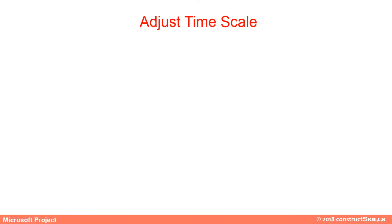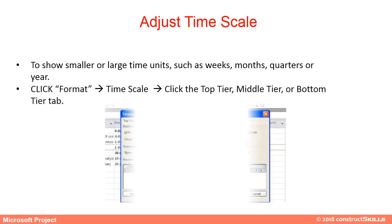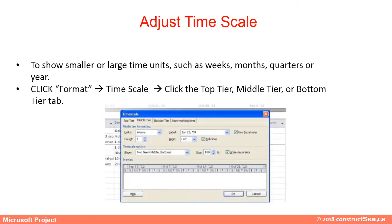While reviewing the Gantt chart on the screen, adjustment of the timescale is necessary to ensure the whole project can fit on the screen. Click on Format, then Timescale, and click the top tier, middle tier, or bottom tier tab to adjust the timescale.